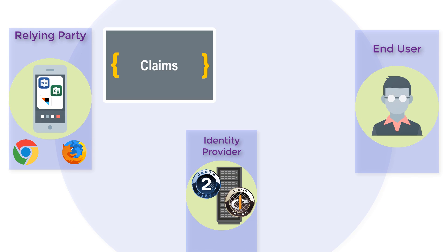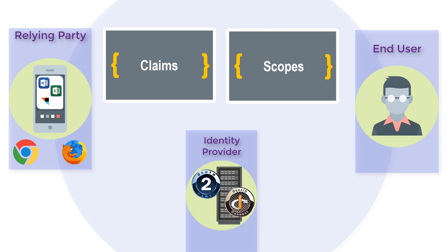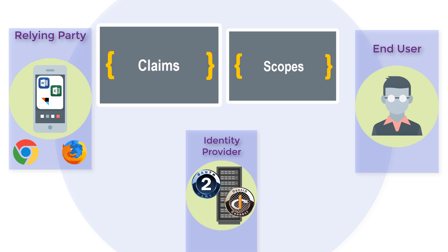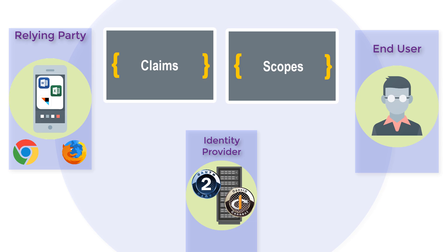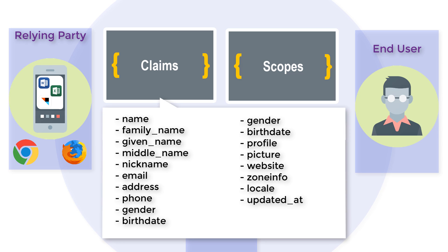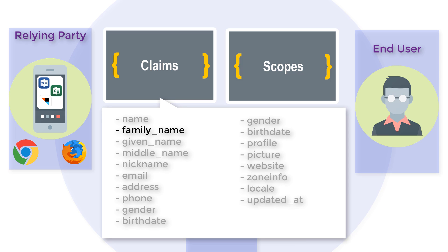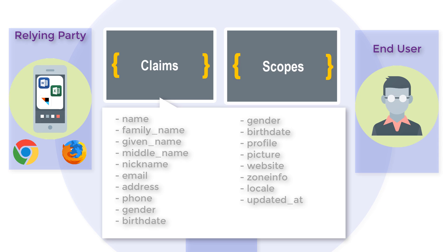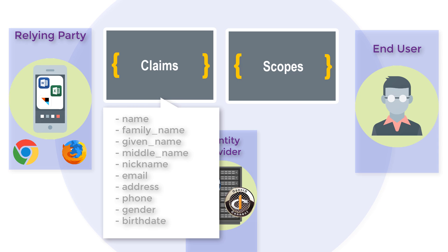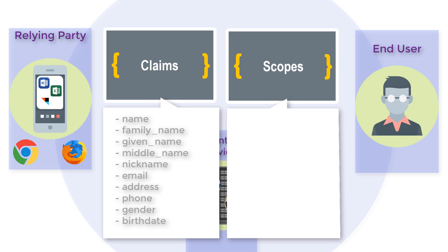OpenID Connect uses claims to retrieve information, but it can also use scopes. The OpenID Connect specification contains around 20 standard claims and four standard scopes, which are used to supply the client application with consented user details. A claim is an individual piece of information, for example a family name or email address. Scopes are used to request that specific sets of information are made available as claim values.